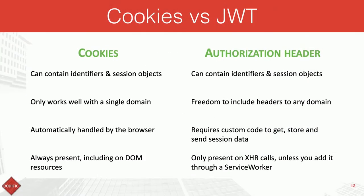There are pros and cons for both options. With cookies, the browser automatically handles them — we don't need to write any custom code. The browser sees the cookie for the website and automatically sends it to the server. With JWTs, we have to manually write code that handles all the transport logic and verification. Another advantage of cookies is that they also work with DOM resources like images, scripts, CSS, and JavaScript. With JWTs, we'd have to manually handle that with service workers or similar approaches.